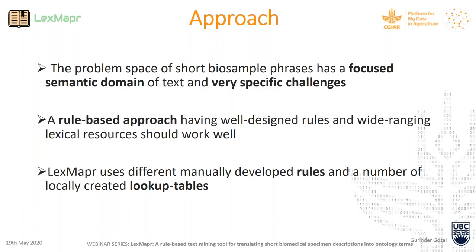LexMapper uses different manually developed rules. We trained our system on 3,000 unique samples from the biosample metadata covering a wide range of issues. We also use a number of locally created lookup tables to accompany these rules for the task of entity linking to the ontologies. The resources incorporated in building LexMapper include FoodOn and GenEpiO as the two key underlying ontologies, which also contain important subsets of terms from ENVO, UBERON, the Unit Ontology, and other ontologies.